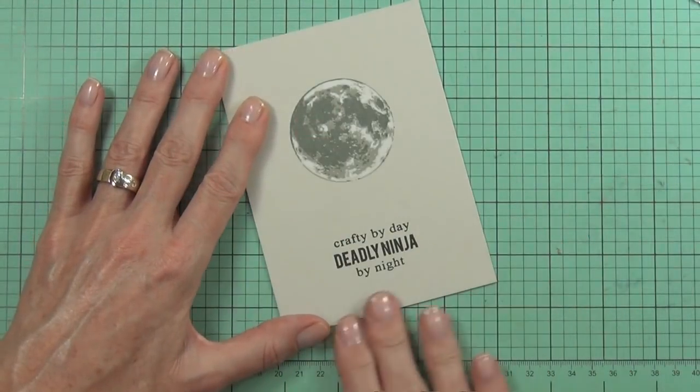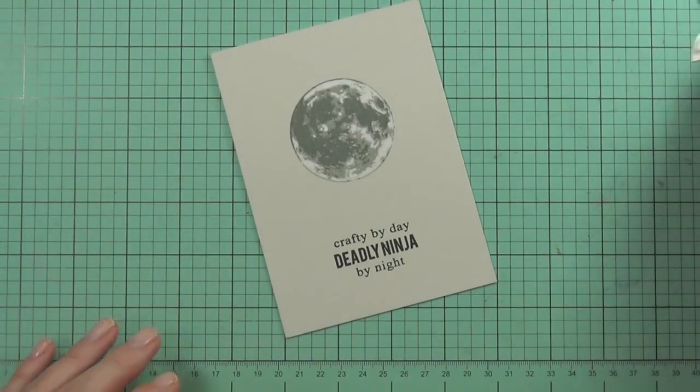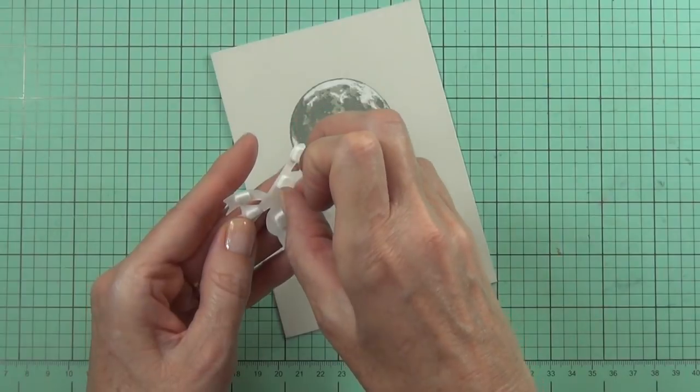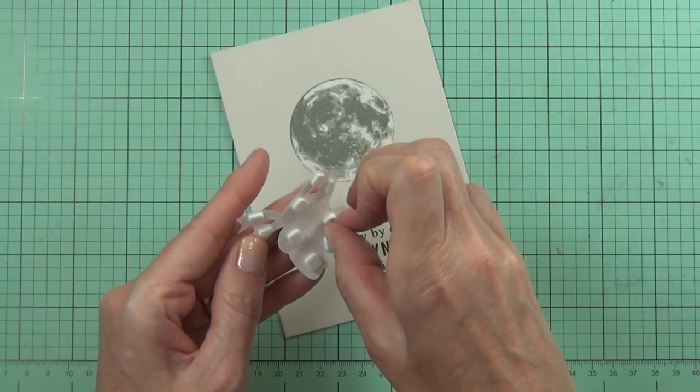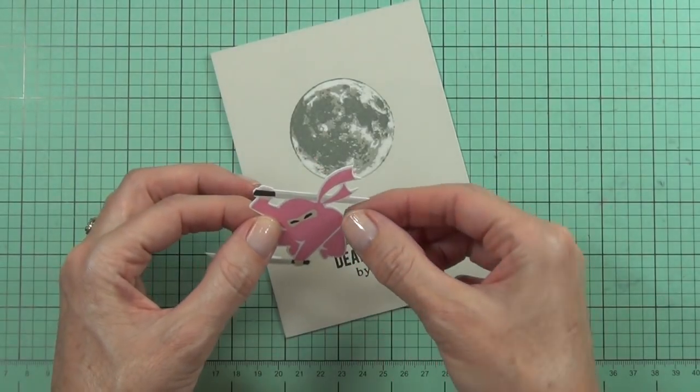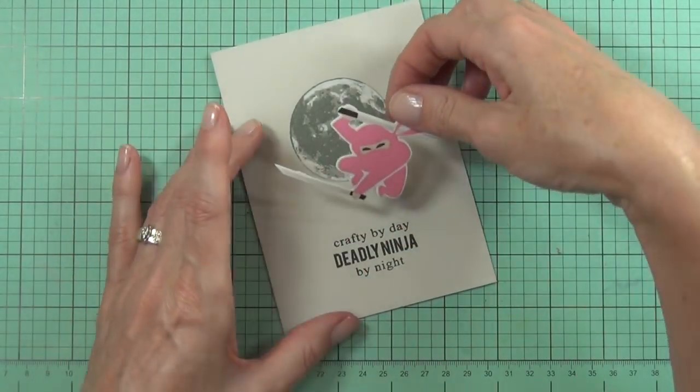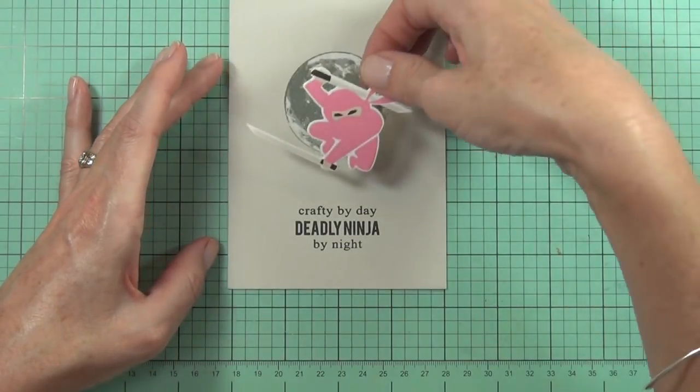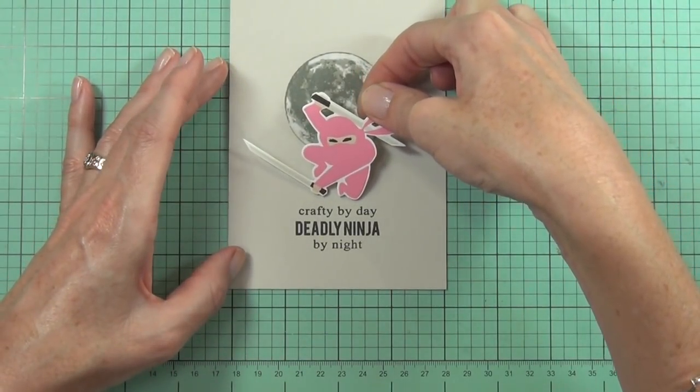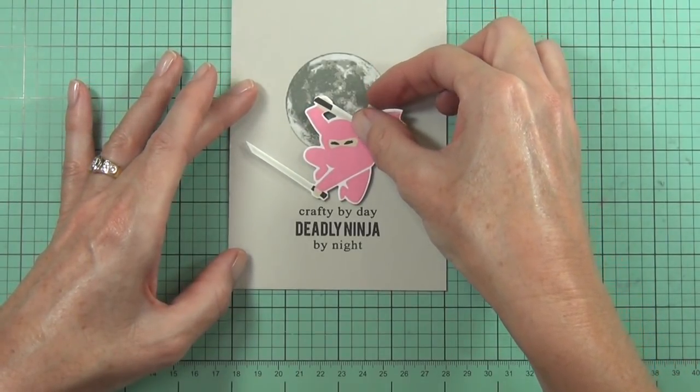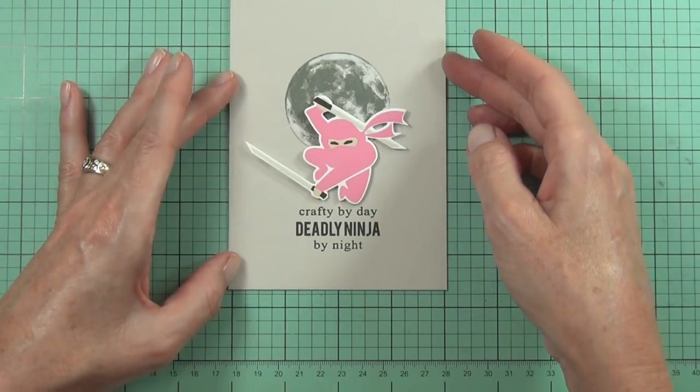I've added some adhesive, oh I'm struggling with my words, I'm sorry, I'm post night duty here. I added it to the front of my top fold card with some adhesive and now I'm just going to pop up my little pink ninja girl. Isn't she awesome? I did also add a rhinestone to her because you need a bit of sparkle on a girl ninja.